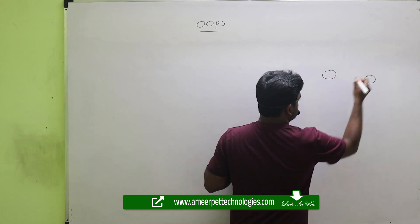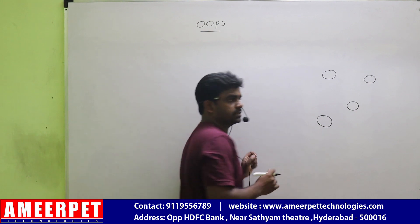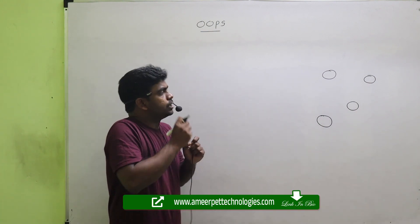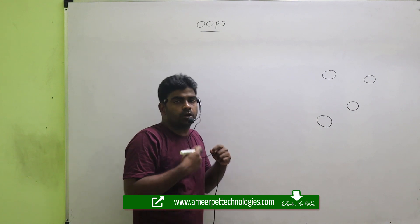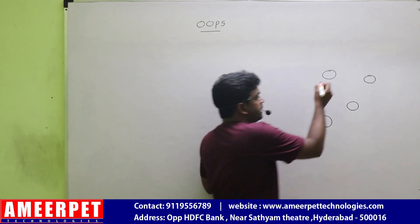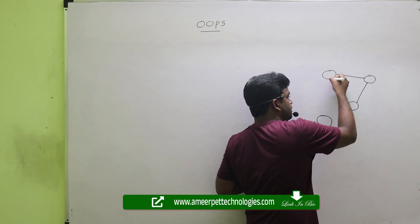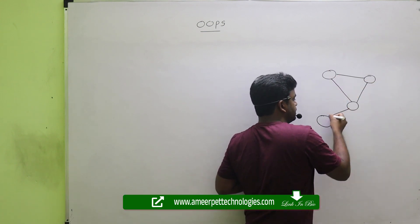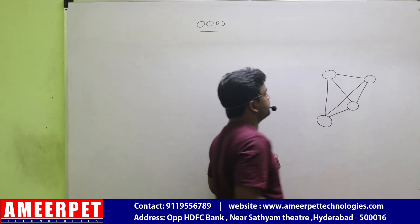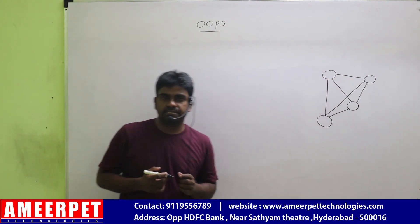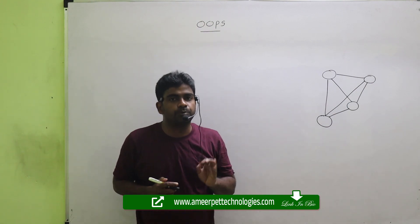This is one object, this is one object, this is one object and this is one object. If you create four objects — how to create four objects, I'll explain. Just creating or defining the objects and establishing the communication between the objects — that is simply called object-oriented programming.